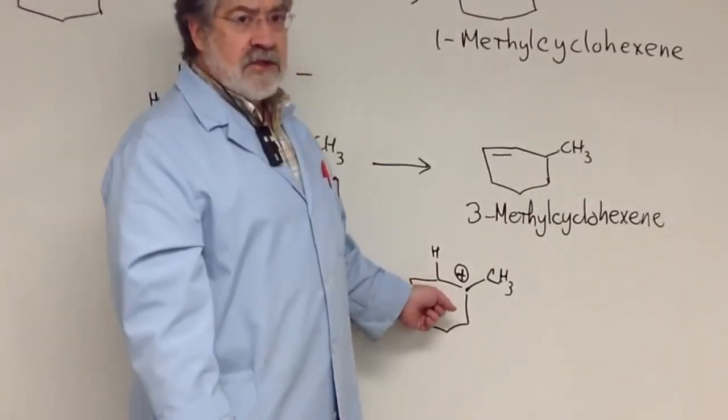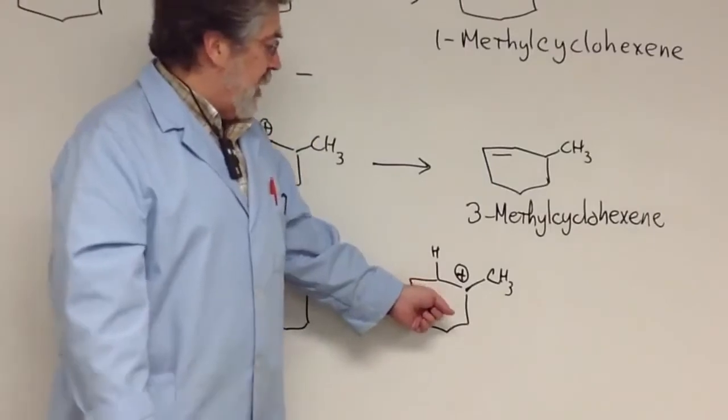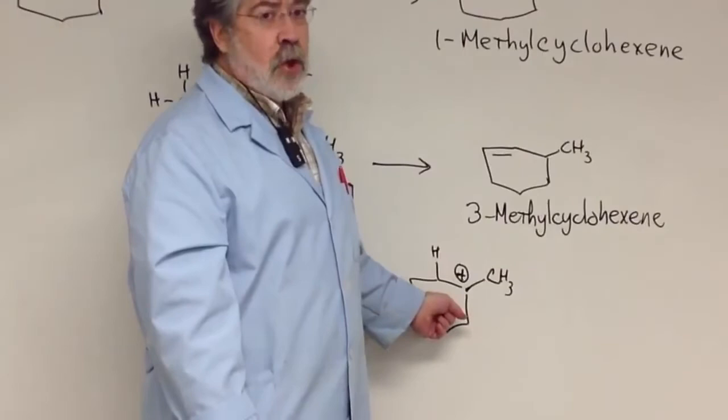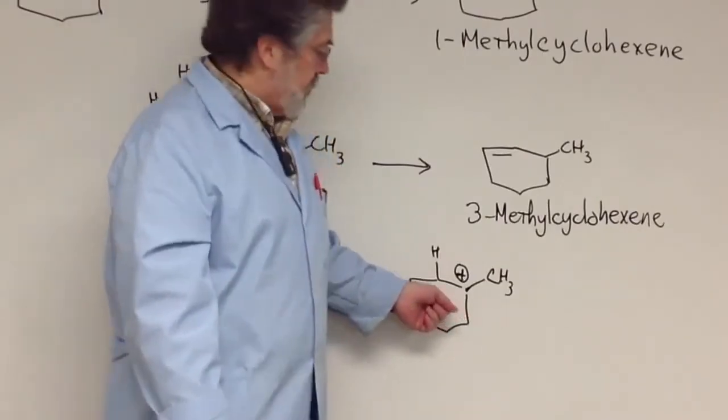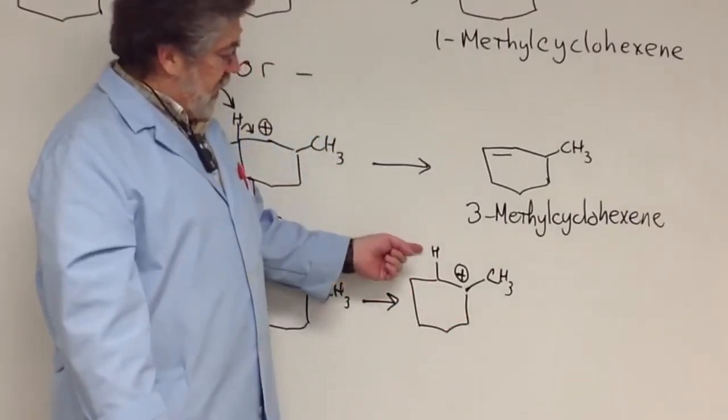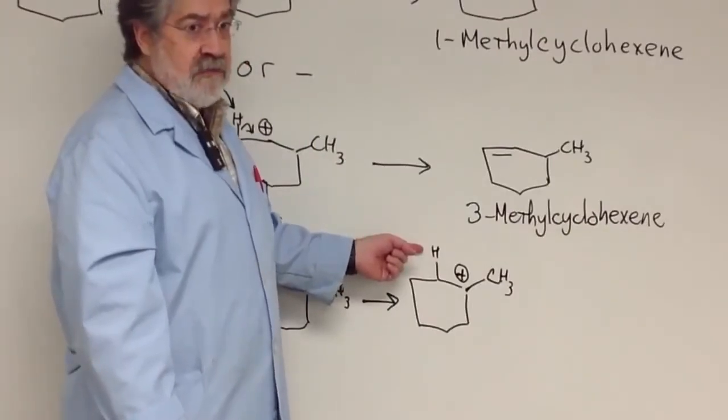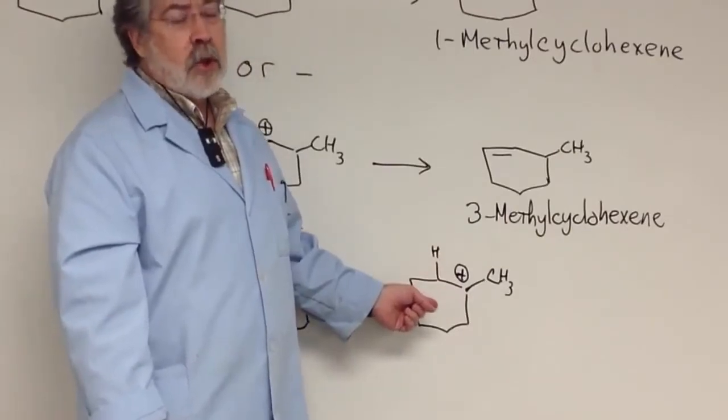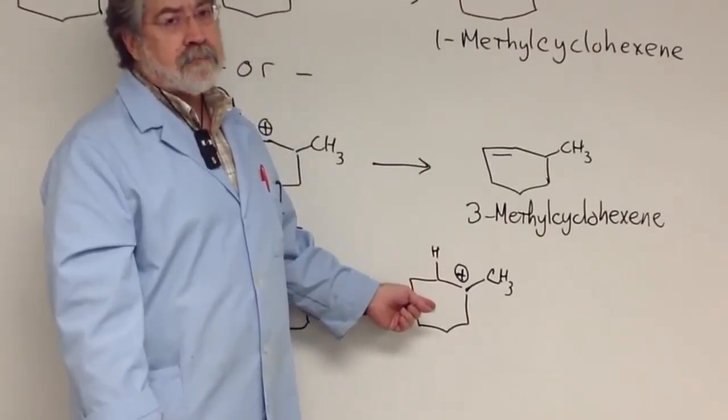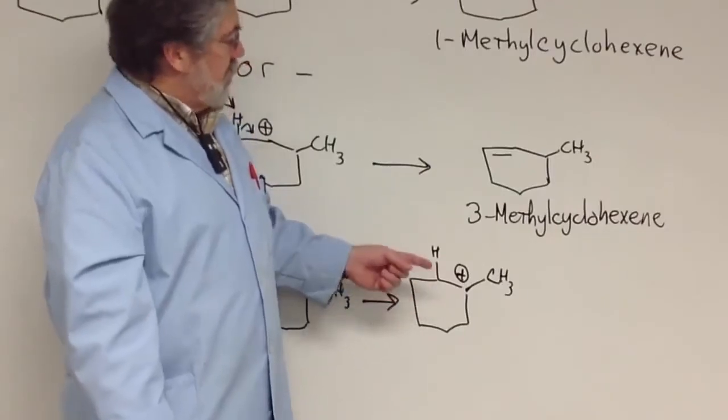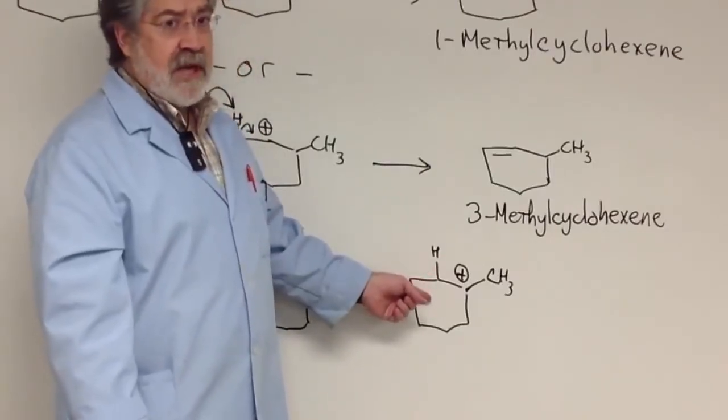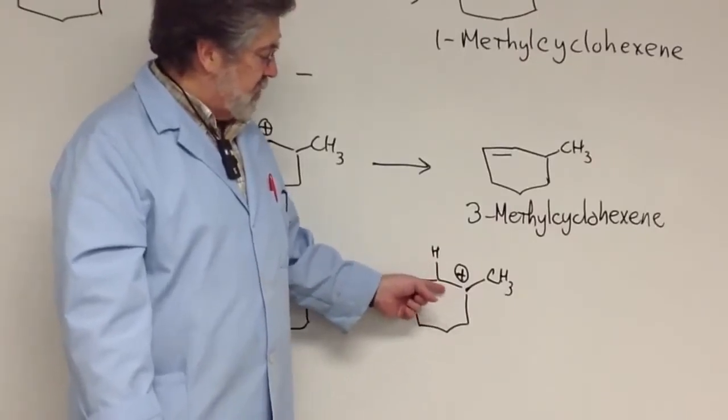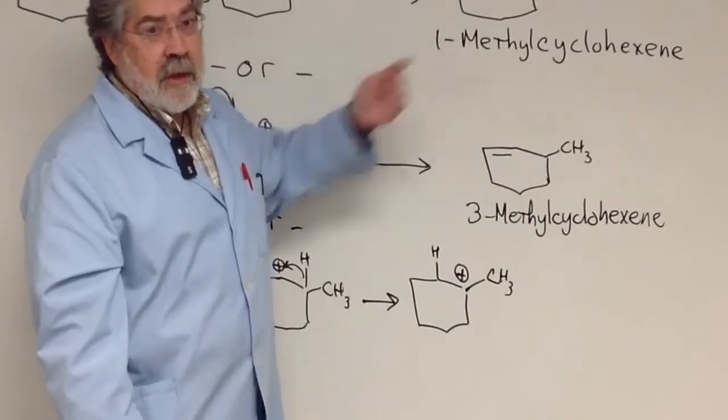Now, from this position, this new carbocation, again, the same thing is going to happen to this that essentially happened up here. And that's loss of a hydrogen on a carbon next door. Think about this for a second. If this hydrogen, which was the hydride shift hydrogen, is lost to put in the double bond, what would that alkene look like? So, if you think about that, and I gave you a couple seconds there to think about that, the alkene produced would be a double bond in this location here, which is 1-methylcyclohexene.